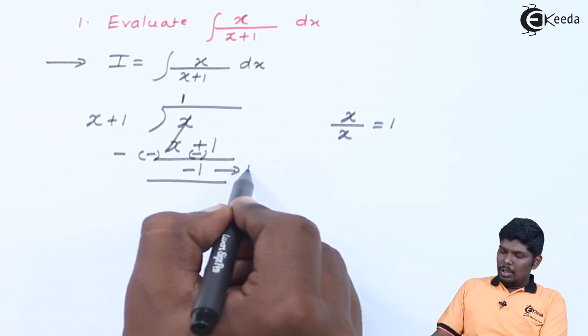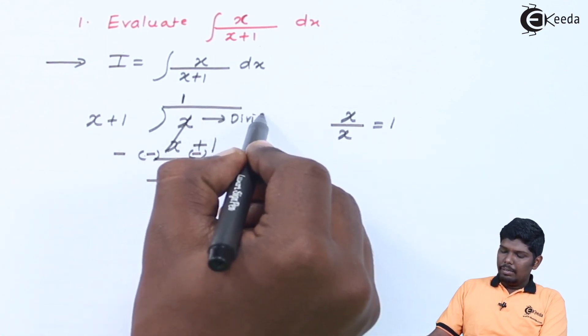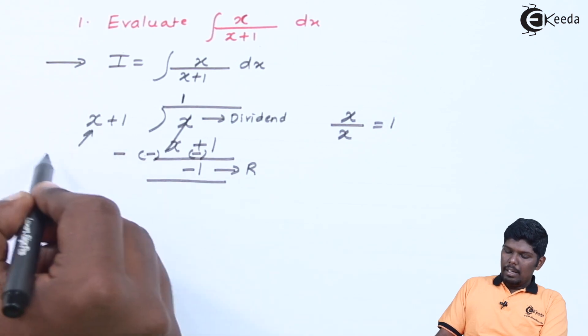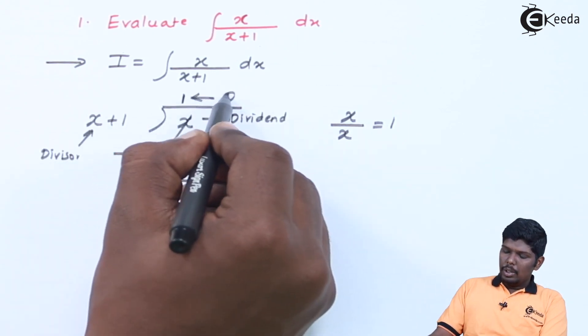So, this is called as remainder. This part is called as dividend. This part is called as divisor and this part is called as quotient.